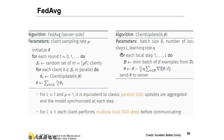Now let's look at the FedAvg algorithm. There are two parts: one conducted on the local client — how the client optimizes or updates the model — and the other on the server side — how the server aggregates or optimizes the model to generate a global copy. For the client update, which is standard supervised training, we specify the batch size, the number of local training steps (epochs), and the learning rate.